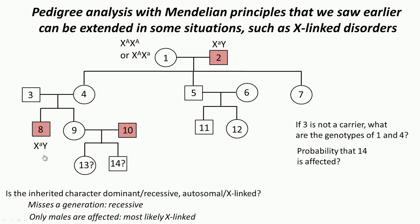Person 8 is affected — an affected male — so it has to be X^a Y, since the disease allele must be on the X chromosome. Person 3 is not a carrier, so genotype is X^A Y — a normal male. Person 4 is a female, not affected. Since the father is affected, she must have inherited X^a from him and X^A from the mother, giving her genotype X^A X^a.